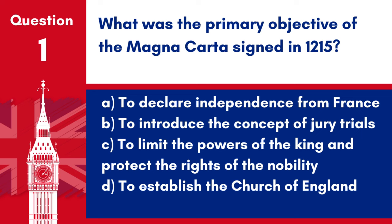Question 1: What was the primary objective of the Magna Carta signed in 1215? a. To declare independence from France. b. To introduce the concept of jury trials. c. To limit the powers of the king and protect the rights of the nobility. d. To establish the Church of England. Answer: c. To limit the powers of the king and protect the rights of the nobility. The Magna Carta was a groundbreaking document that sought to limit the powers of the king and ensure certain rights for the nobility, marking a significant step in the development of constitutional law.